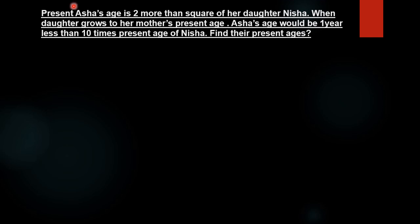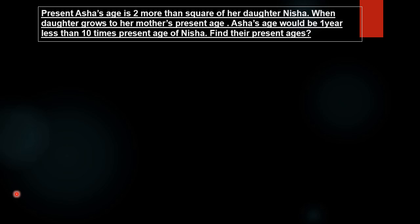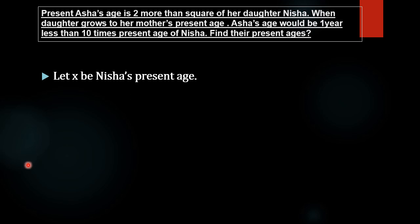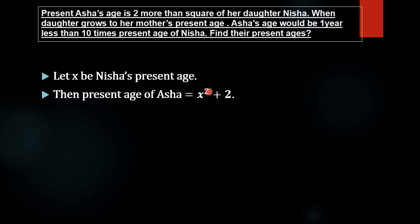We have: present Asha's age is two more than the square of her daughter Nisha. Let x be Nisha's present age; then the age of Asha is x² + 2, that is, the square of Nisha's age plus 2.